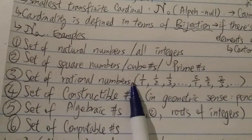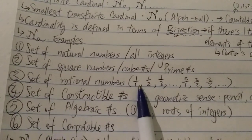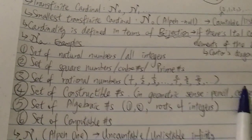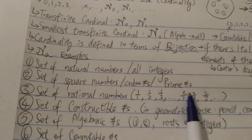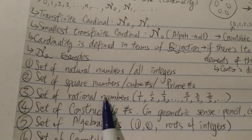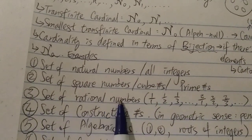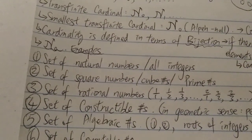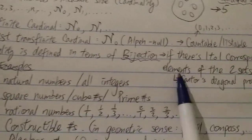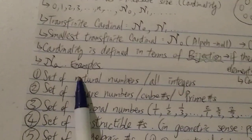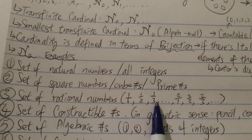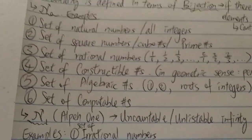The third example is the set of rational numbers — for example, 1/1, 1/2, 1/3, 2/1, 2/2, 2/3, and so on. There are infinitely many of them, but it is a countable infinity. Any number you can represent as a ratio — that's why they're called rational numbers, you can see the word 'ratio' in it — forms a countable set. The set of all rational numbers has cardinality aleph-0 because there's a bijection between the rational numbers and all the natural numbers; you can pair them up one-to-one.